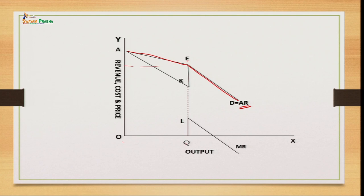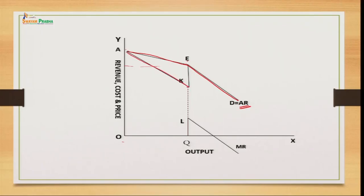This is called the price rigidity model because there is a kind of rigidity. If a firm is selling at price EQ and output OQ, things remain stable. But if any individual firm increases the price — say from point E to A — the other firms will not increase their prices. Customers will then shift their demand to substitutes, causing the firm to lose customers. The demand curve above the kink is of elastic nature since competing firms do not follow a price increase.